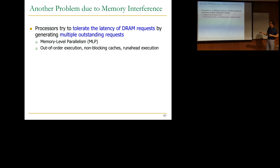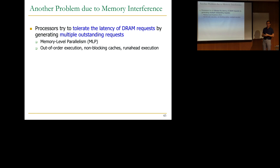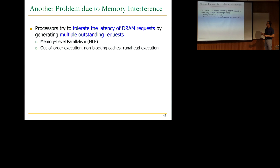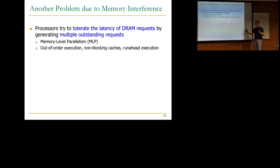So I think this is a case for coordinating at some level what the processor is doing and what the memory controller is doing. Processors today try to tolerate the long DRAM access latency by generating multiple outstanding requests — we call this memory level parallelism. You do this by performing out-of-order execution. Whenever there's a miss outstanding, there could be other misses from independent instructions, and you use non-blocking caches to enable this, and also run-ahead execution — which is part of my PhD thesis — and multi-threading.